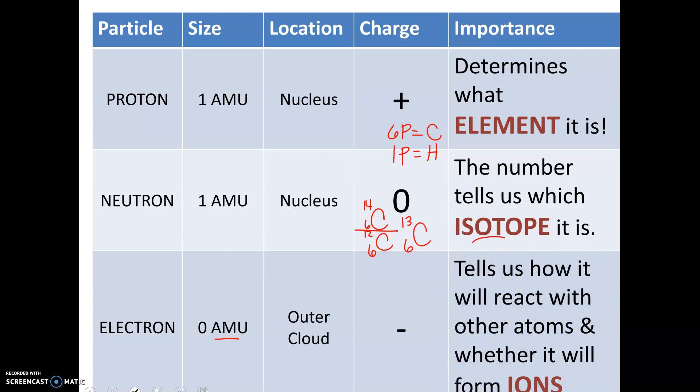Electrons tell us how it will react with other atoms. Because atoms like to have a certain number of electrons in their outermost shell - electrons are arranged in levels or shells. If they don't have a full outer shell, they tend to want to react with other atoms. So the number of electrons tells us how that atom will react with others. Will it want to steal electrons? Will it want to give its electrons away? Or will it stay neutral? And we call atoms that have charges because they've either picked up or given away their electrons - we call those ions.